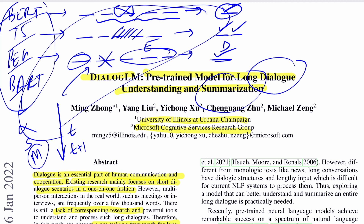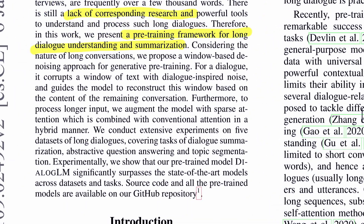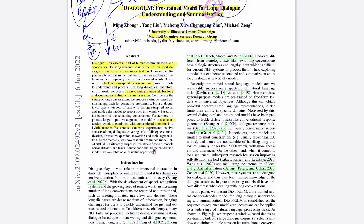They also talk about adding the word 'long' because these conversations can go for hours and hours. The transcript you can expect is around 5,000 to 6,000 words long. So how do you scale your transformer model to understand such big sequences? Most models start consuming a lot of memory or might not even support sequences of this length. To address this, they propose a window-based sparse attention mechanism combined with conventional attention in a hybrid manner — full attention plus sparse attention.